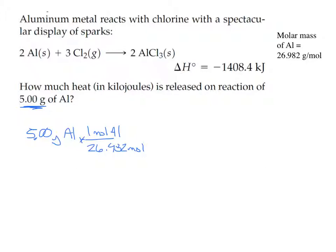Most of you got this far — we now know how many moles of aluminum we have. The next question is: do we know anything about the relationship between moles of aluminum in this reaction and the amount of heat produced? The answer is yes, because we have a balanced reaction and this new piece of information: delta H.